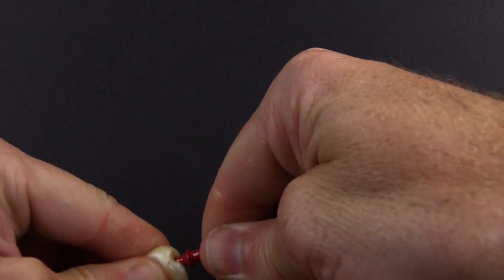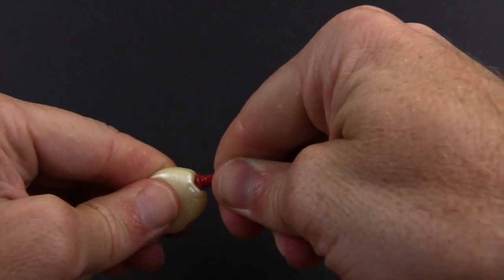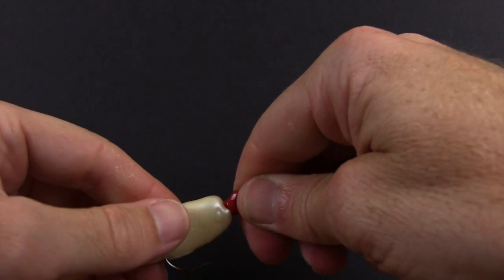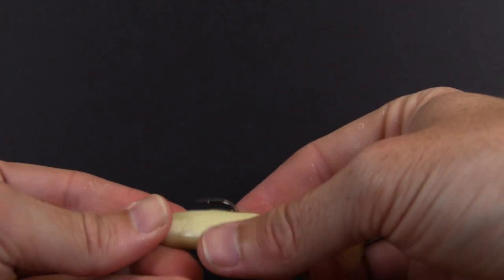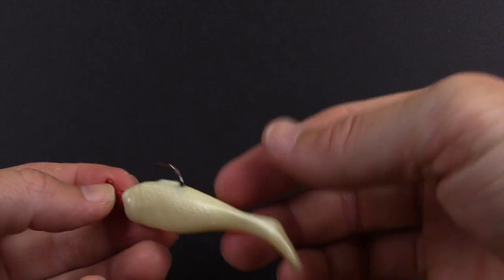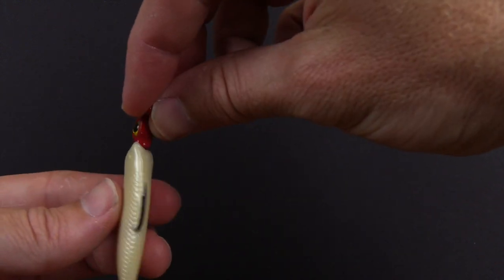Now it's a matter of just pulling it up, and this does take some pressure. These gulp baits are real strong and sturdy, so you've got to put a good amount of pressure on there, but there it is. You can see the gulp, it's straight. It's going straight down the middle.